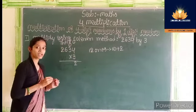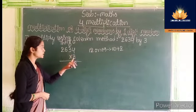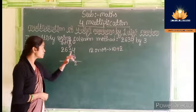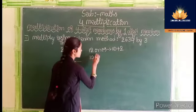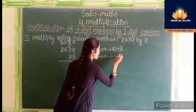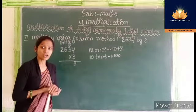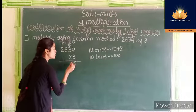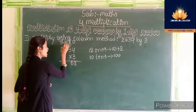Write 2 below the 1s column. Then carry 1 to the 10s column. Now we have to multiply 3 tens by 3. 3 into 3 is 9. 9 plus 1 ten, we get 10 tens. 10 tens means 100. In this 100 there are no 10s. So 0 should be written below the 10s column. Then carry 1 to the 100s column.